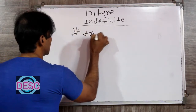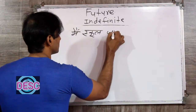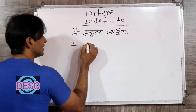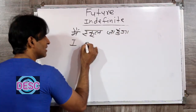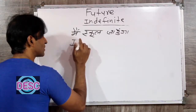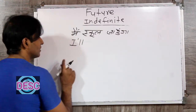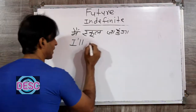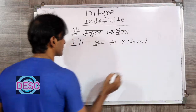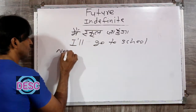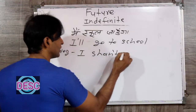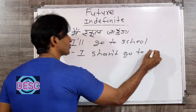'Main school jaunga' — I shall go to school. The short form of I and shall is I'll. So: I'll go to school. For the negative — 'Main school nahi jaunga' — I shan't go to school.